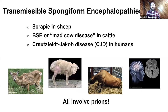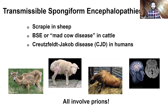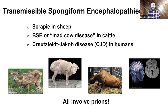Chronic wasting disease is part of a family of diseases called transmissible spongiform encephalopathies — a mouthful, but it means transmissible, spread from animal to animal; spongiform, like a sponge; and encephalopathy, involving the brain. It belongs to a group that includes scrapie in sheep, BSE — bovine spongiform encephalopathy or mad cow disease — in cattle, and human diseases such as Creutzfeldt-Jakob disease. They all involve prions.